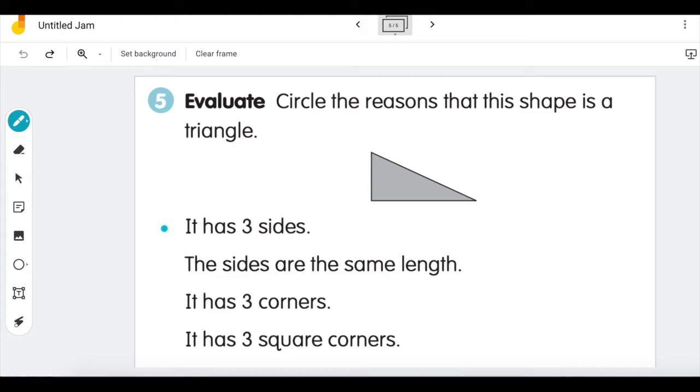Is this a triangle because it has three sides? If that's true and it's a triangle because it has three sides you'll circle it.